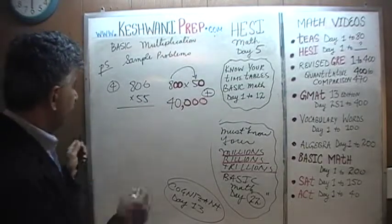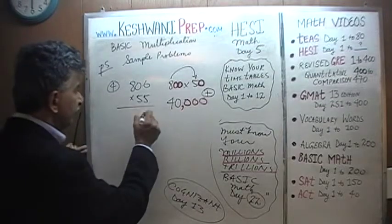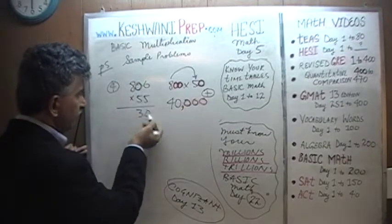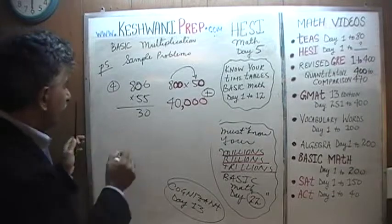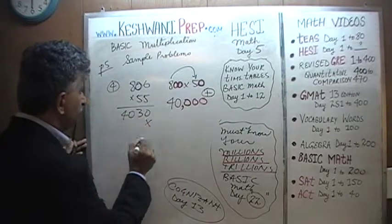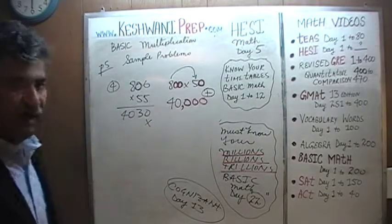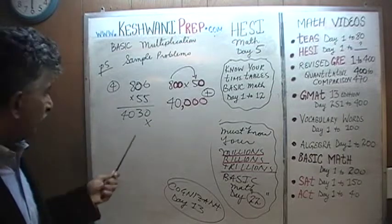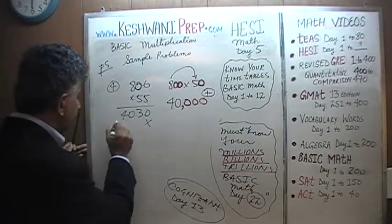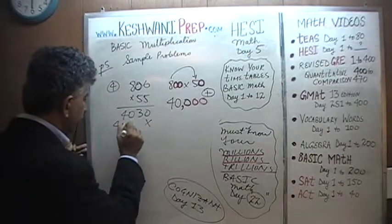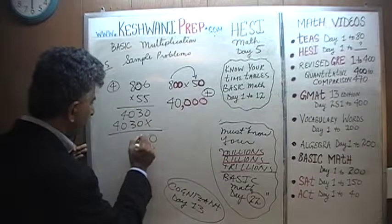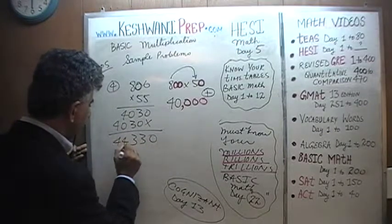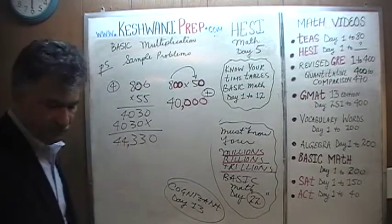Let's do it out: 5 times 6 is 30; 5 times 8 is 40. Then multiplying by 5 again, we get 4,030 shifted one place. The correct answer is 44,330 — and we estimated 40,000.